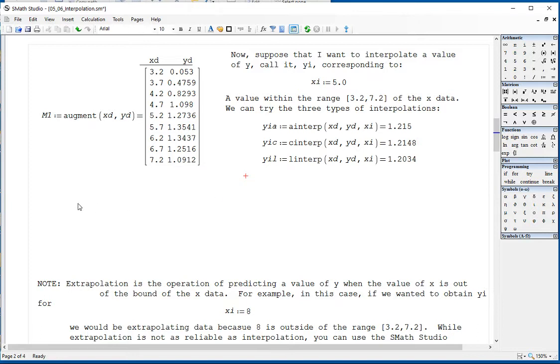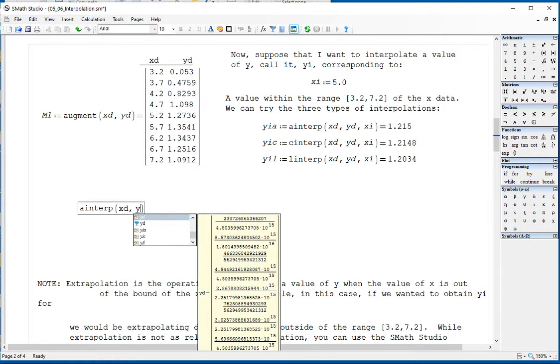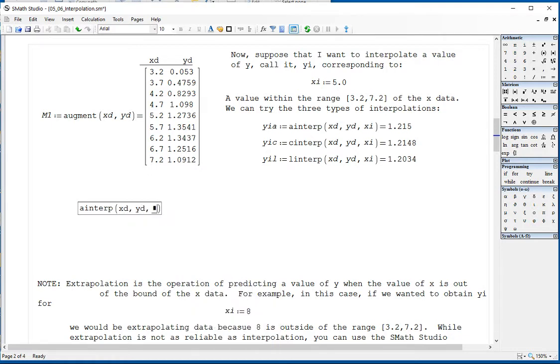I'm going to use a different value. Let's say, a interp, xd and yd are my vectors that I know. And let's say that I want to know what is the value for 6.5.